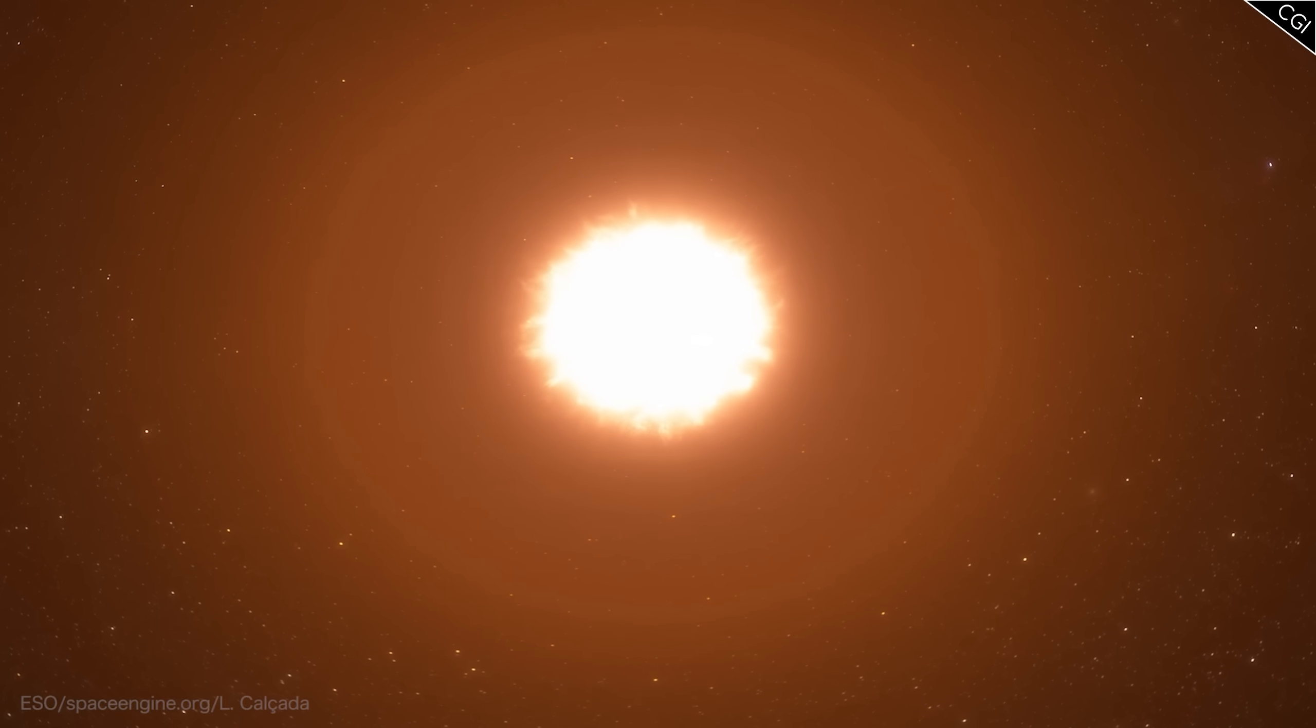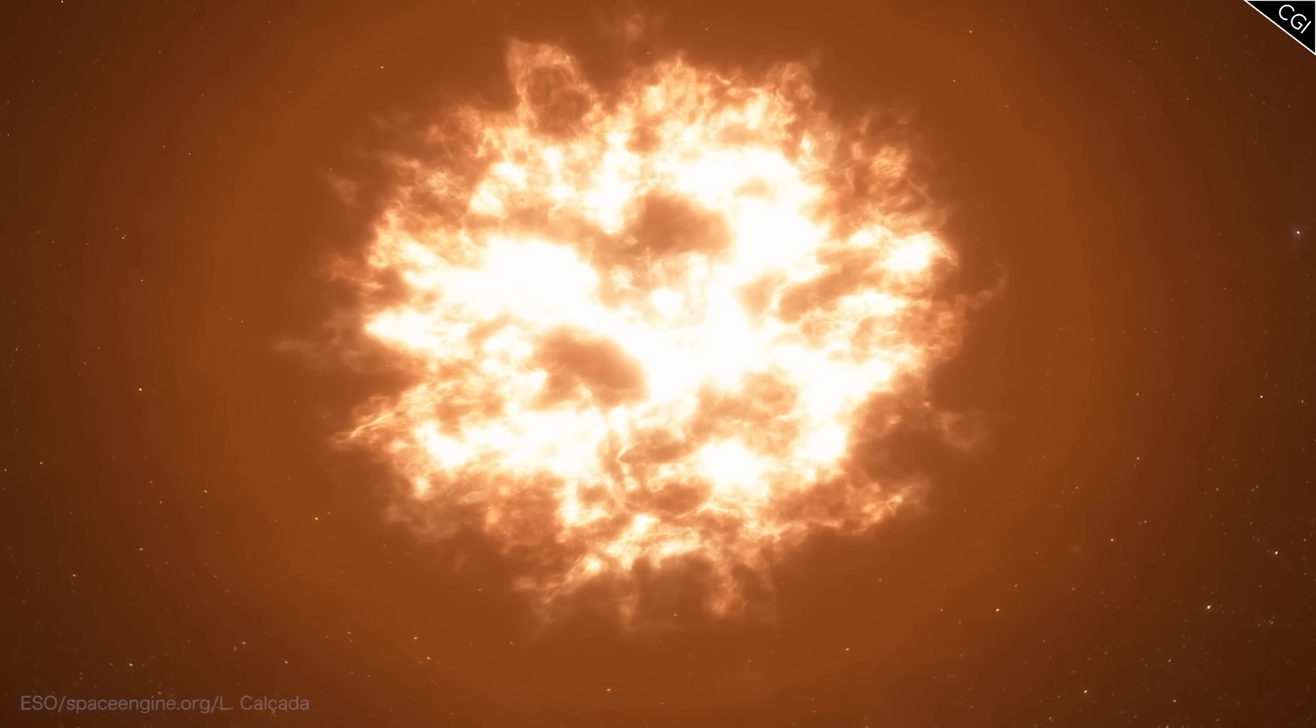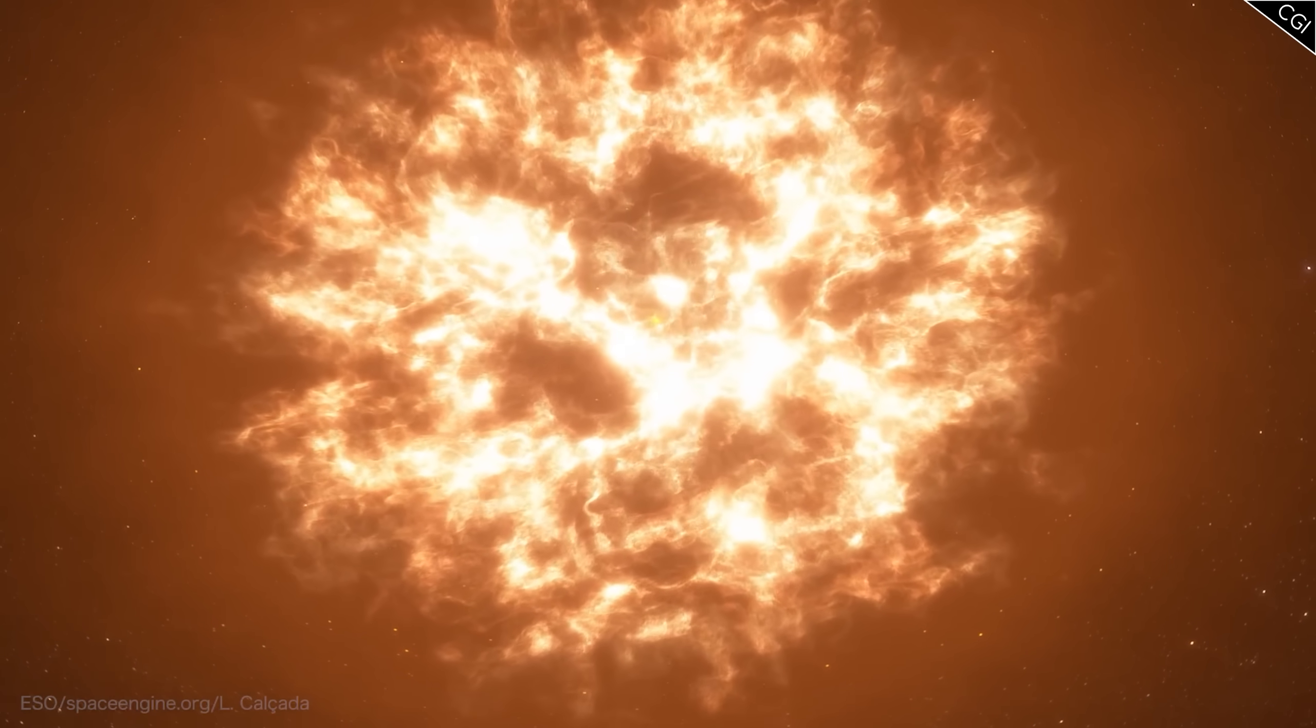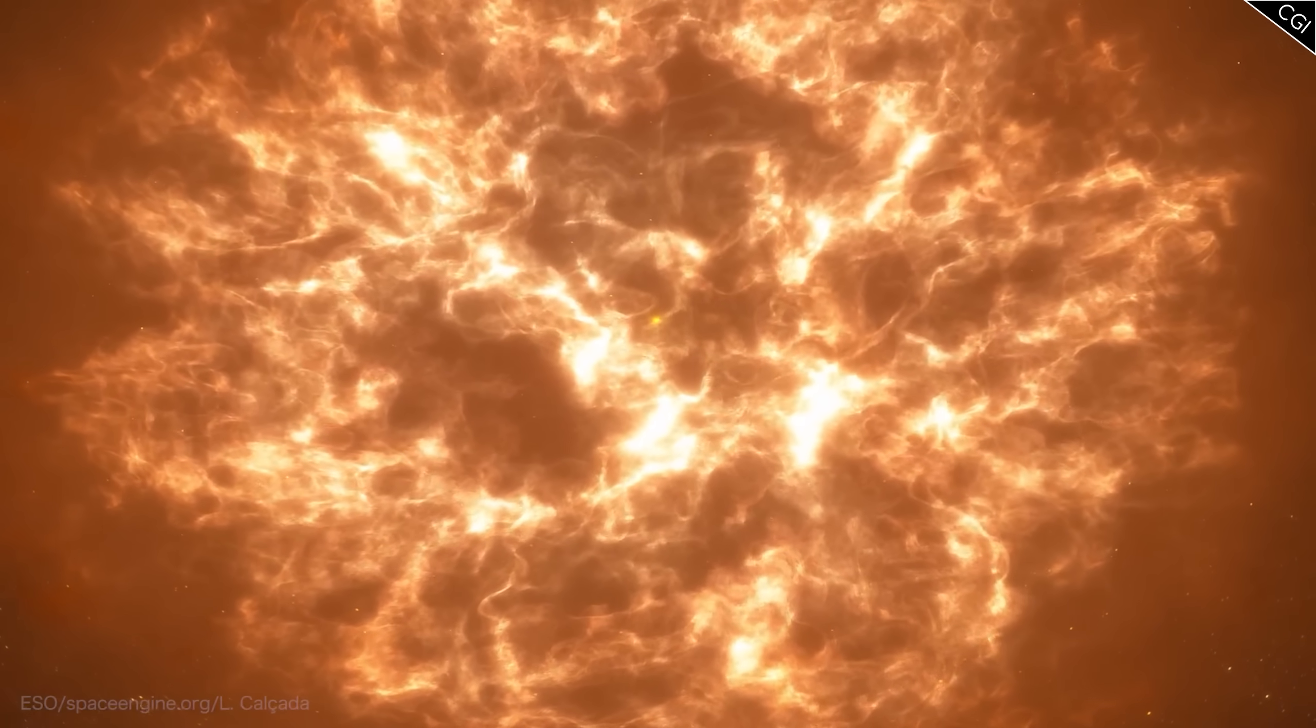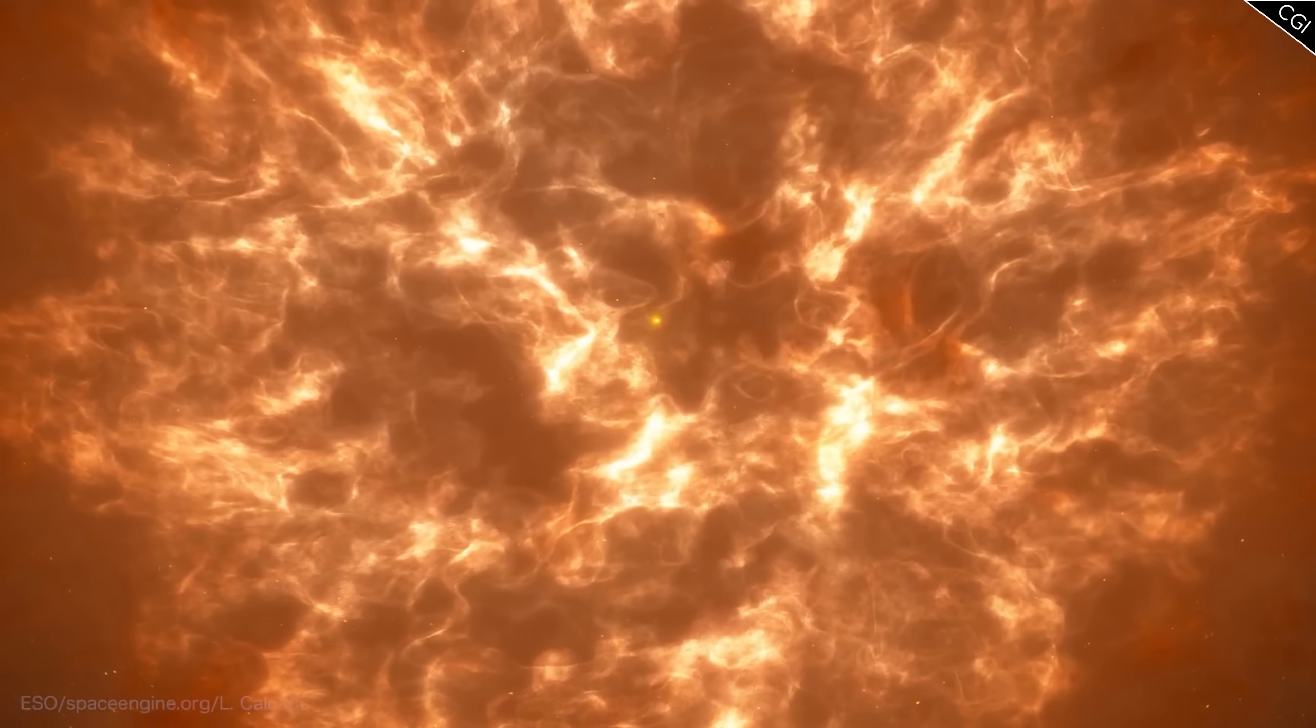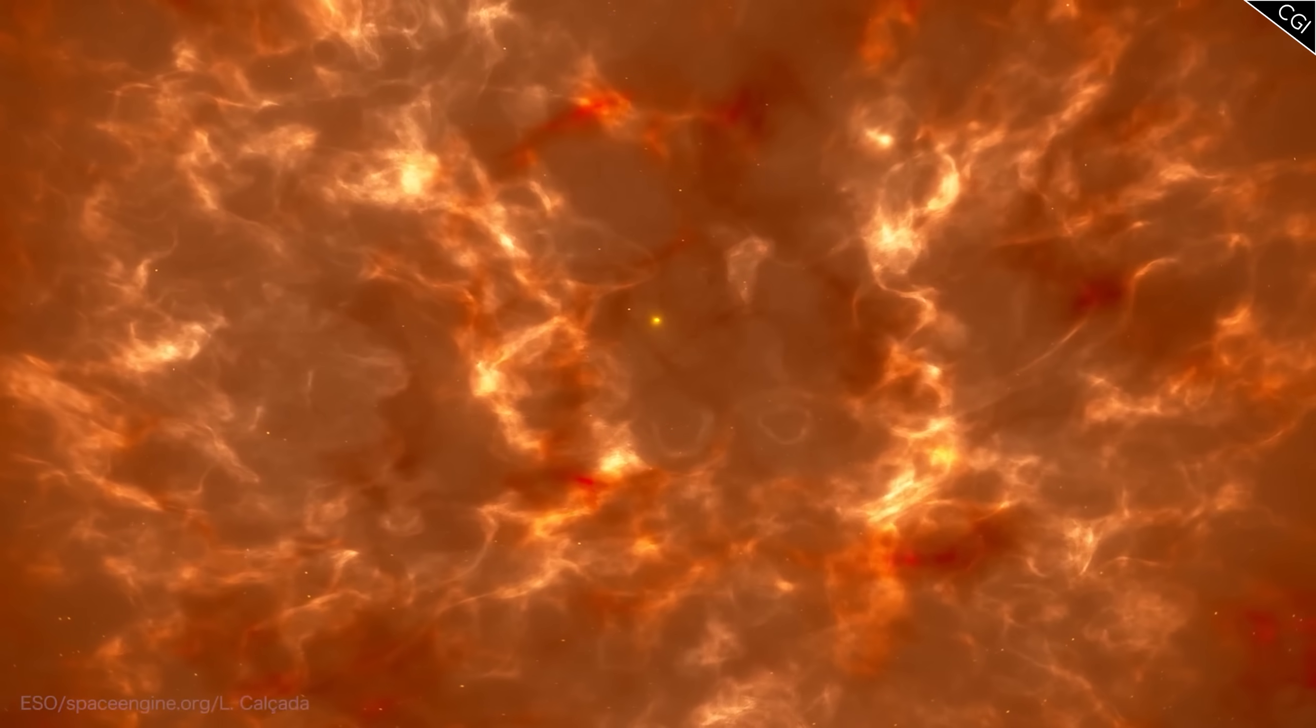The big problem with a supergiant on your doorstep is that it is a ticking time bomb. Supergiants tend to be on the verge of erupting in a supernova. A supernova going off only one light year away would be catastrophic, probably sterilizing the entire planet as radiation from the shockwave passes over.